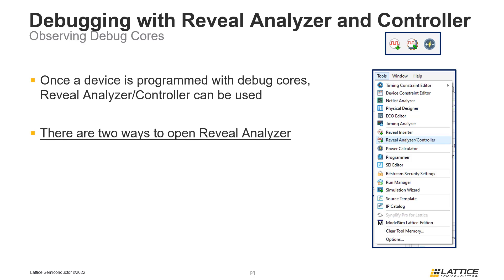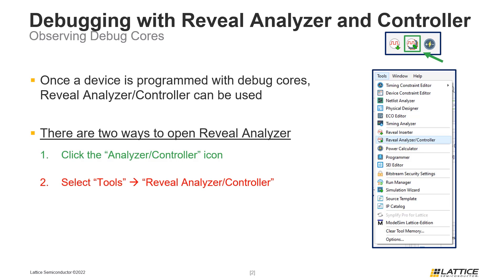The first way is by clicking the Reveal Analyzer icon from Radiant's toolbar, as can be seen from the figure on the slide. The second way to launch Reveal Analyzer is to select Tools from Radiant's menu bar and then select Reveal Analyzer/Controller from the drop-down list of options that appears.